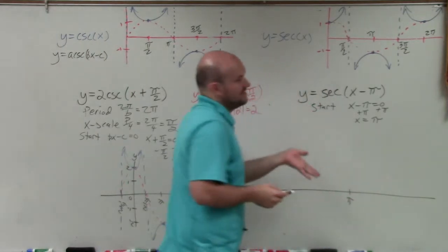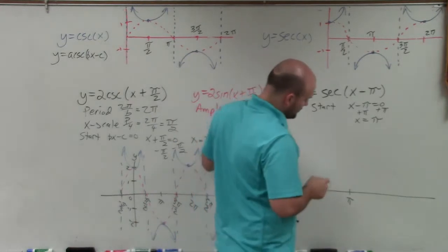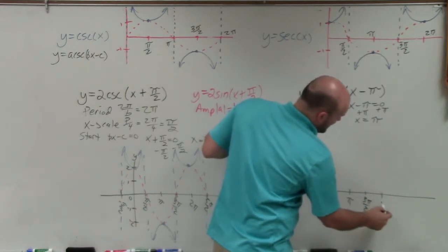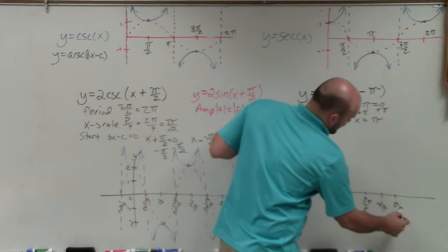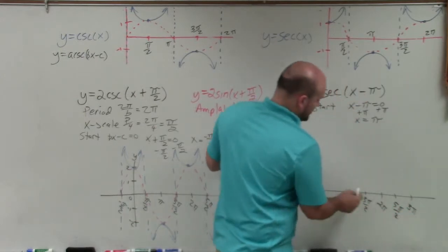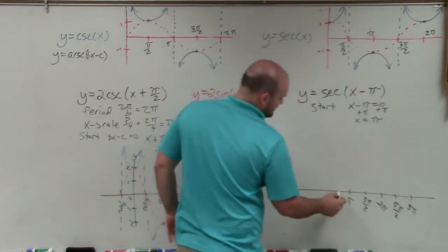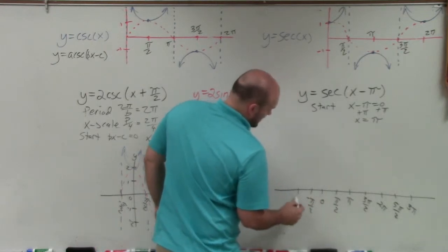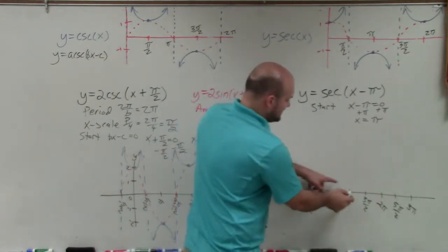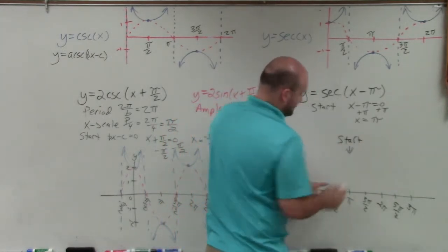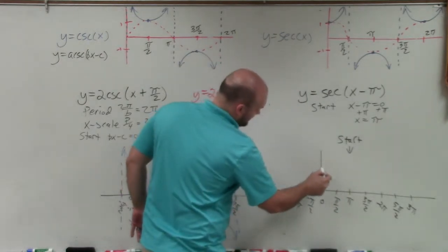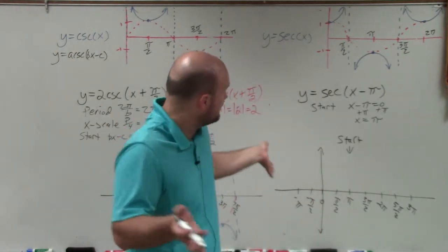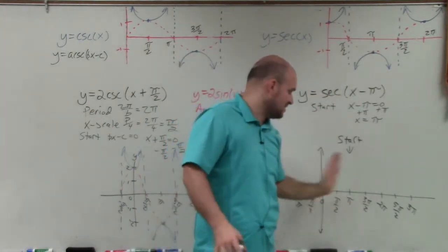Starting at π, with an x scale of π/2, the values going right are: π, 3π/2, 2π, 5π/2, 3π. Going left: π/2, 0, −π/2, −π. This is where we start our initial period. The y-axis is at 0, just so you know where it is, but since we have a phase shift, we start our period at π.